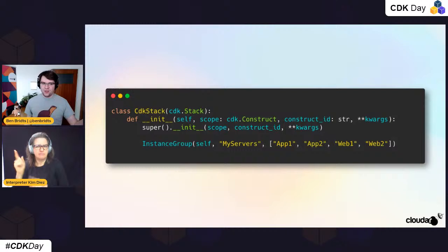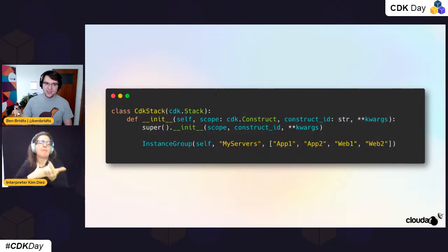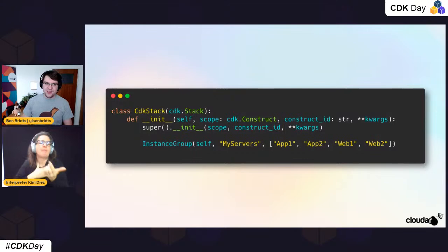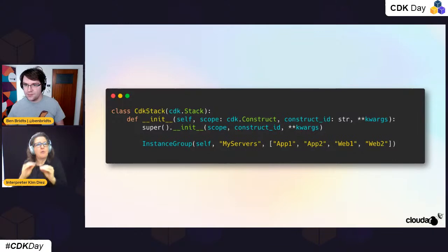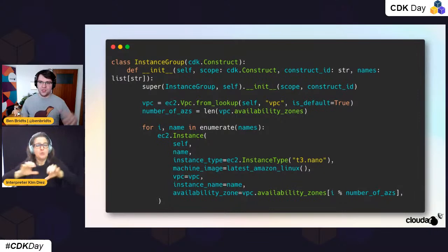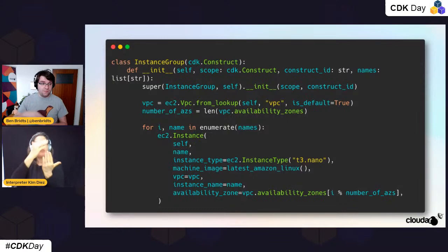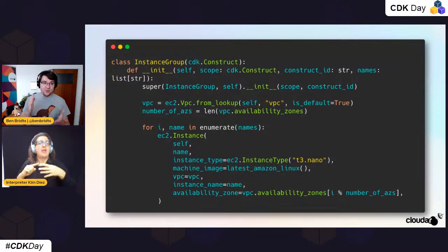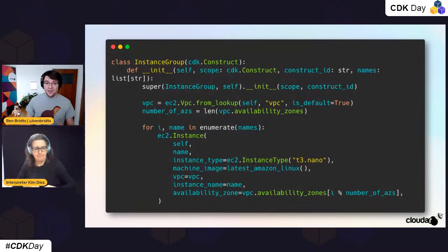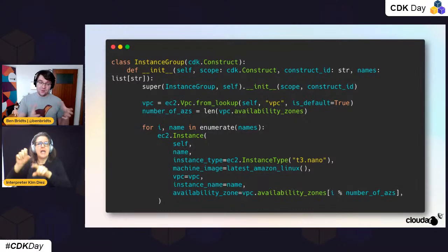So we created our construct called instance group. The team can pick whatever service name they want and give a list of servers. In this case, we have two app servers and two web servers. The code does the heavy lifting — we know which VPC to use, have a default AMI with bootstrapping software, and we just loop over the list of names to create one EC2 instance for every name.